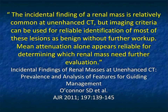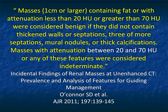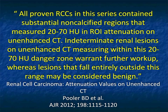O'Connor noted that the incidental finding of a renal mass is relatively common on non-contrast CT, but imaging criteria can be used for reliable identification of most lesions as benign without further workup. Mean attenuation alone seems reliable. Masses over a certain size containing fat, or with attenuation under 20 or over 70, are considered benign if they don't have thick septations or thick walls. Between 20 and 70, they're considered indeterminate.